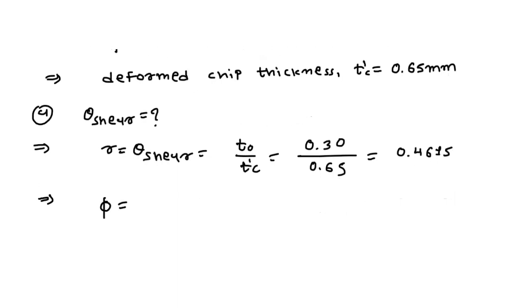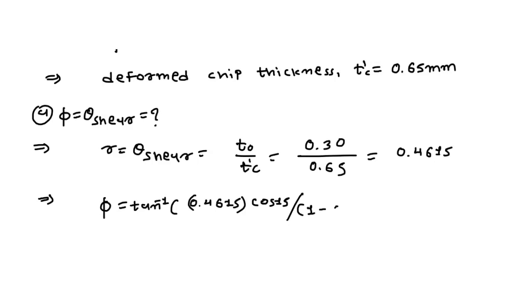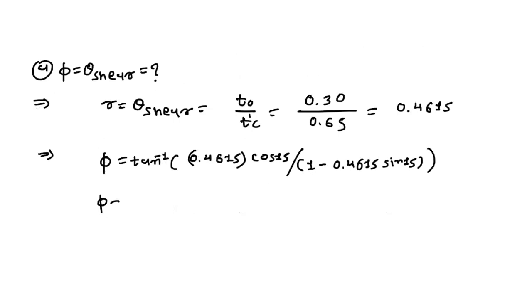Now to find the shear plane angle phi, we write phi equal to tan inverse of 0.4615 multiplied by cos 15, divided by 1 minus 0.4615 multiplied by sin 15. Simplifying, we get tan inverse of 0.5062, which gives phi equal to 26.85 degrees.